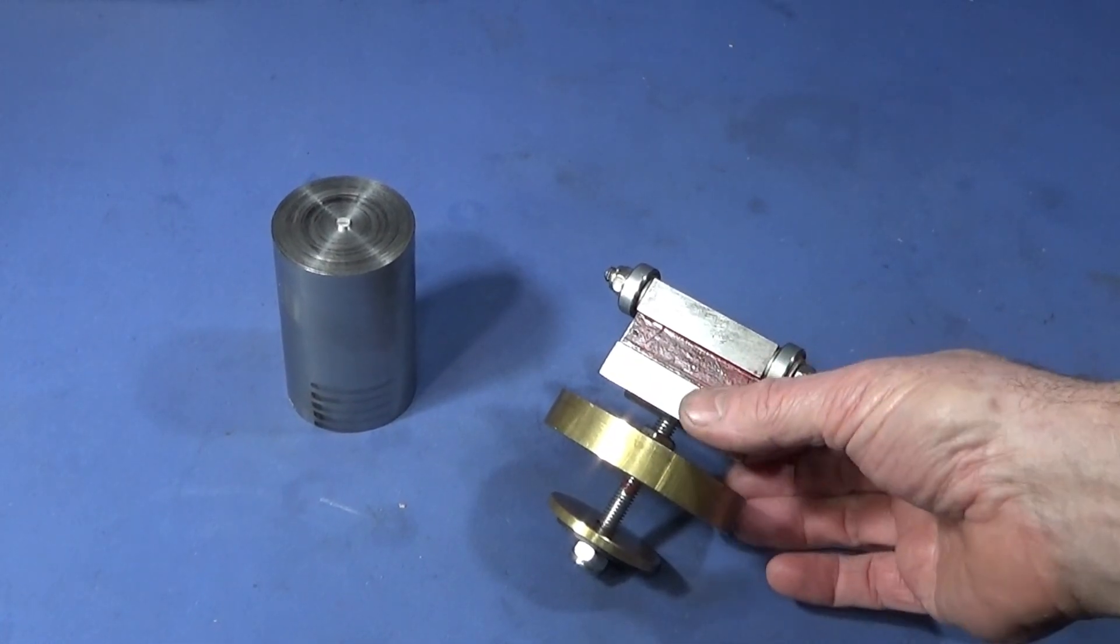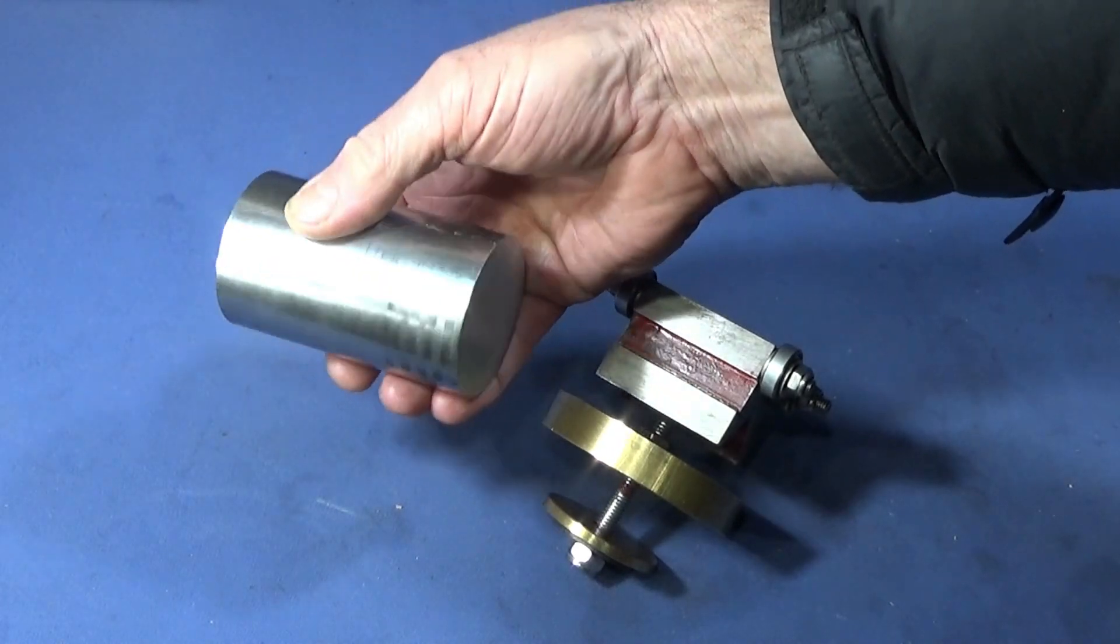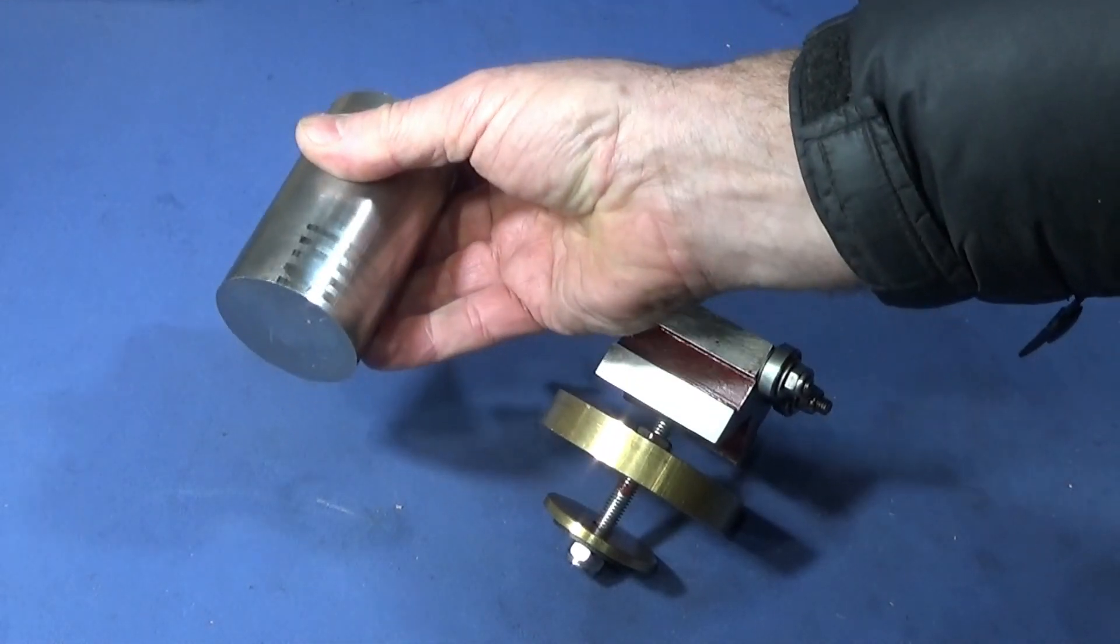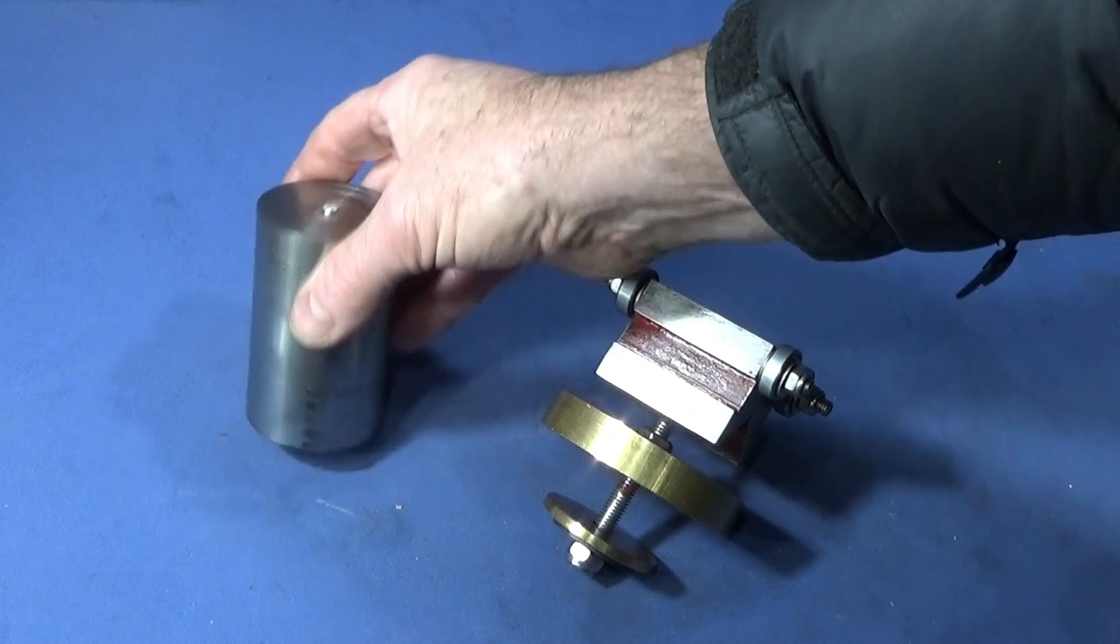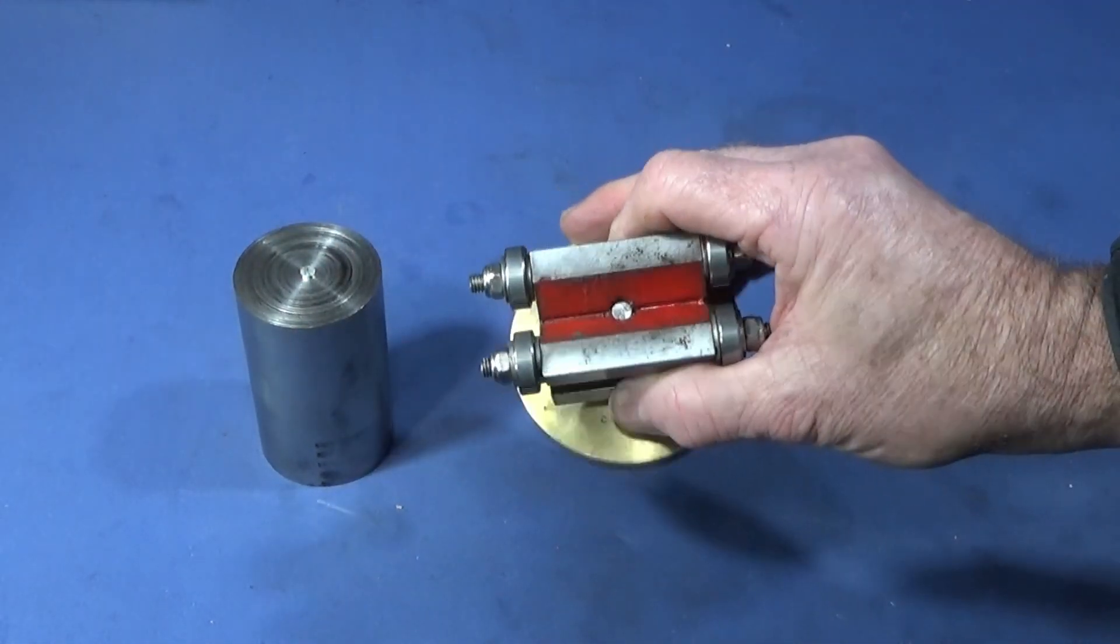Right, just a very quick video today. I'd just like to show you how I parted off some two-inch stainless steel. It's S316 and I had a long piece of bar which I acquired, and I made this tool some time ago.